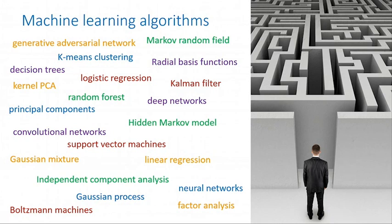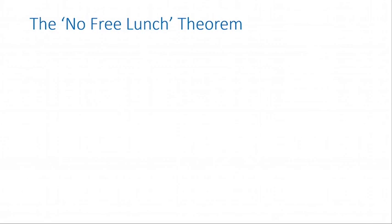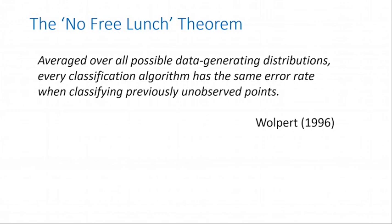Why do we need all these different machine learning algorithms? Can't we just have a single general-purpose algorithm for all applications? It turns out we can't, because of a very important theorem with the wonderful name of the No Free Lunch theorem. It says that if we average over all possible data distributions, then every classification algorithm has the same error rate as every other when classifying previously unobserved data points. So there's no such thing as a universal machine learning algorithm.